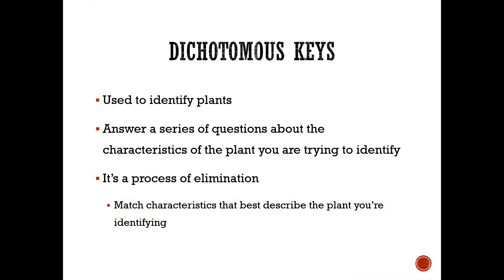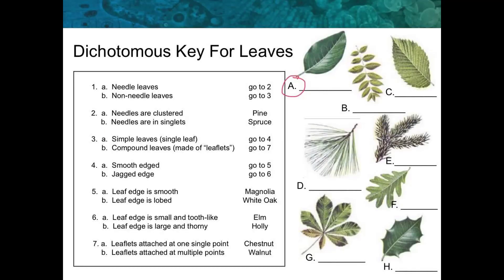Dichotomous keys are used to identify plants. You answer a series of questions about the characteristics of the plant you're trying to identify — it's essentially a process of elimination. For example, you might start with needle versus non-needle, and if it's a needle leaf, proceed to the next paired question, and so on.